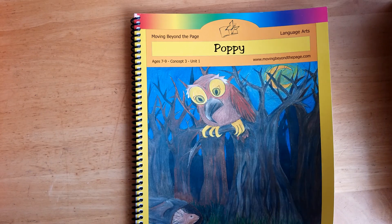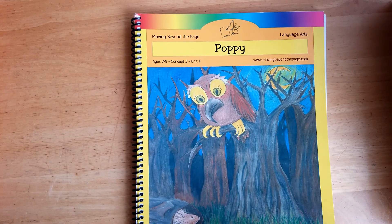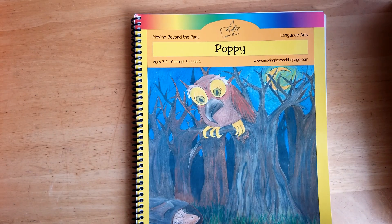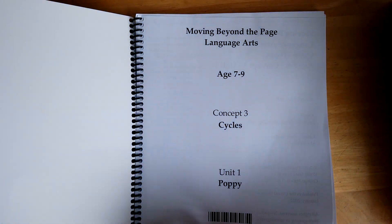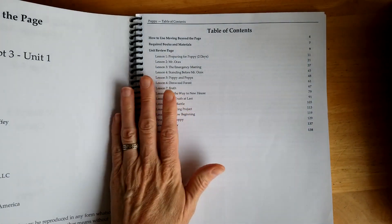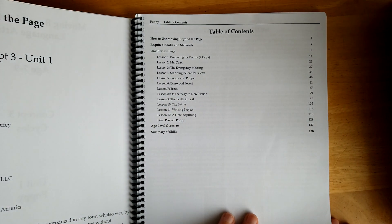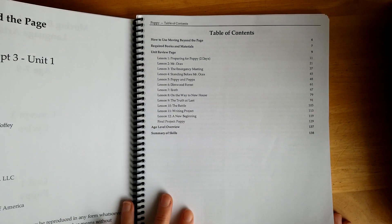There are four or five other books in this series and they're all great, but this one from Moving Beyond the Page goes along with, I believe, the second book in the series. Poppy is a fun book. It's about a mouse and an owl.